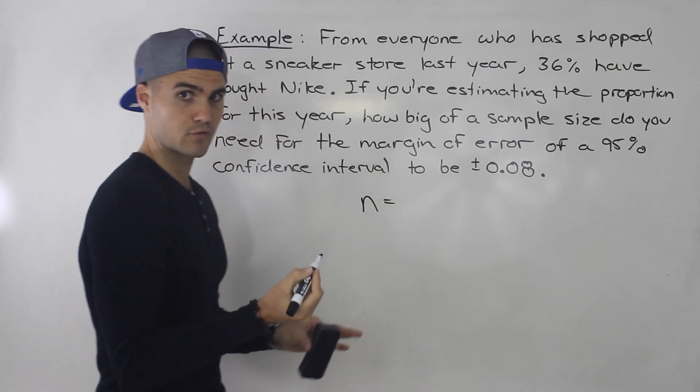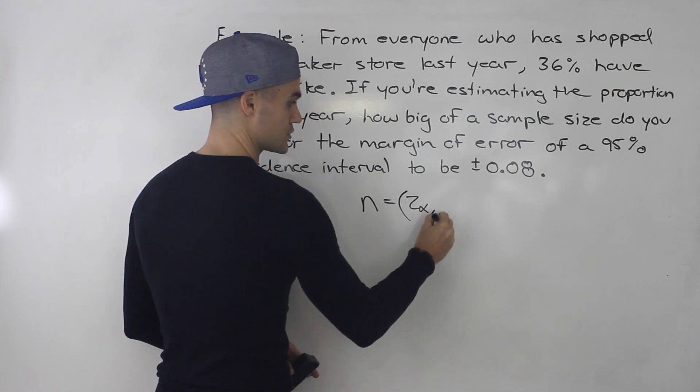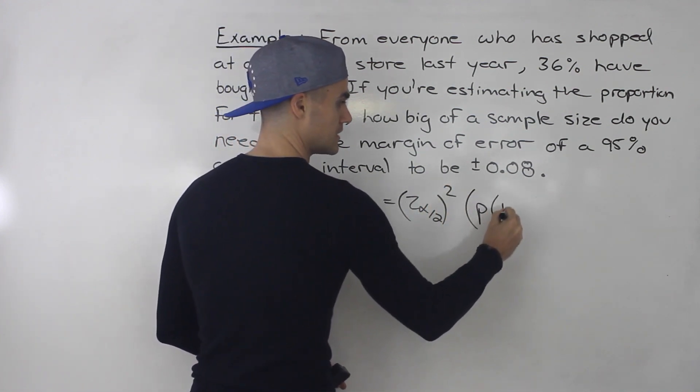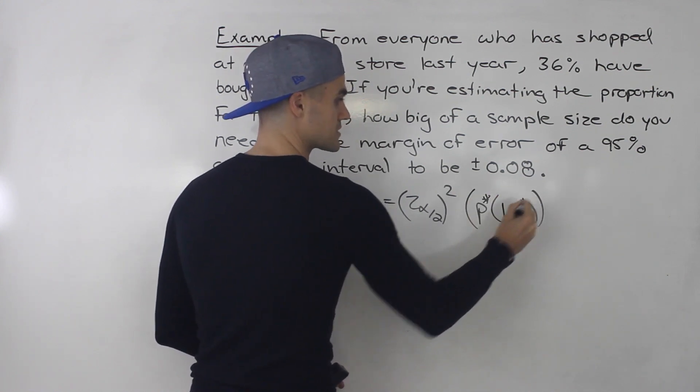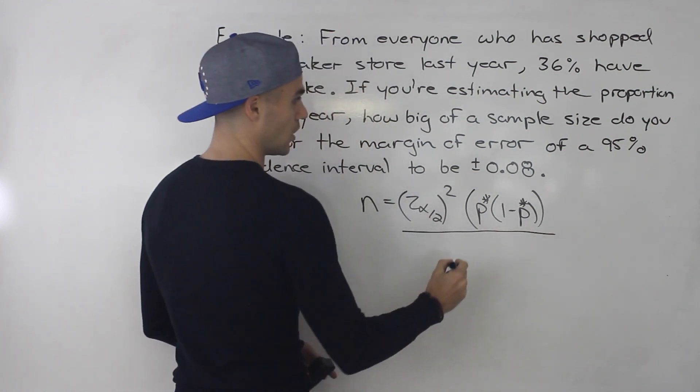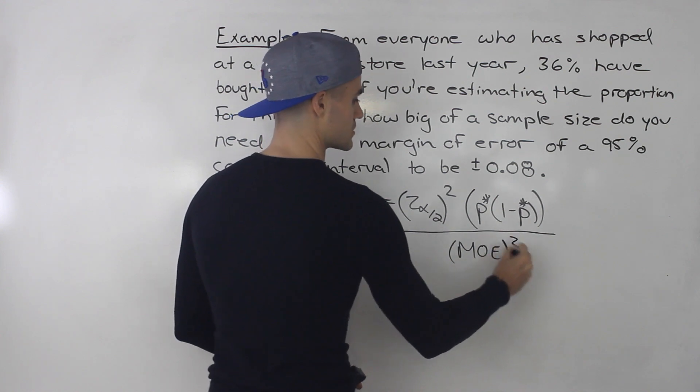So we're going to be using that formula that I introduced: z alpha over 2 squared times p times 1 minus p, actually p star times 1 minus p star, right? The estimate for the population proportion over the margin of error squared.